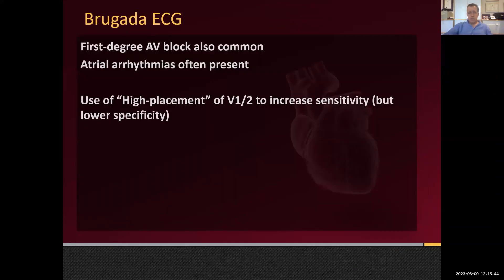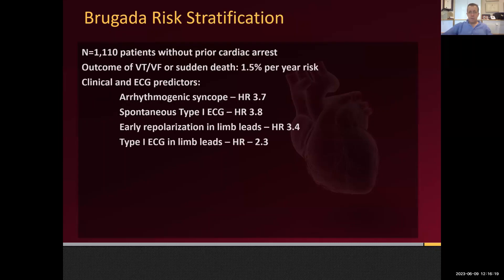High placement increases sensitivity but lowers specificity. A good trick: if you think you see Brugada in a young person and there's also a first-degree AV block — which would be unusual in a young person — that's the mixed phenotype of the sodium channel mutation. Approximately 10% of Brugada patients also have a first-degree AV block, which is helpful. They may also have fractionation of their QRS, usually in the terminal portion — what we call an fQRS — and that's also prognostic.